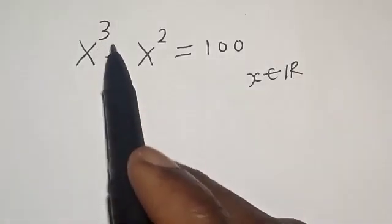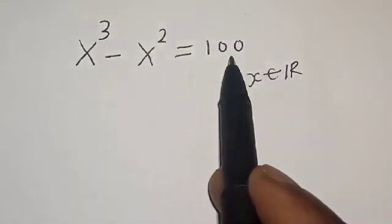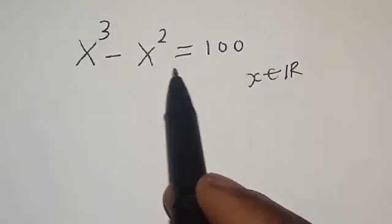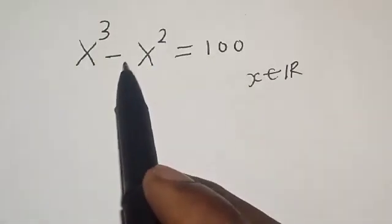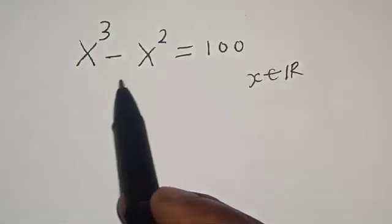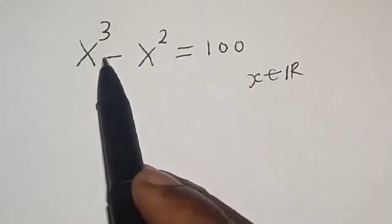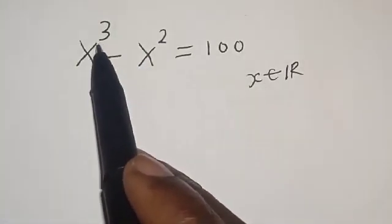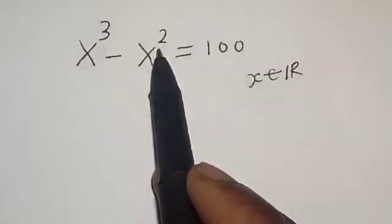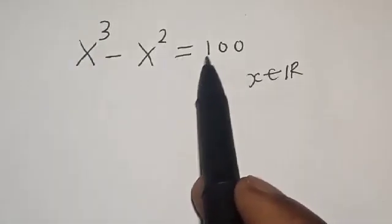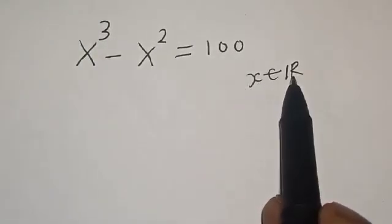Hi everyone, welcome to my class. In this class, we want to find the value of x from this given equation: x raised to power 3 minus x squared is equal to 100, where x is a real number.